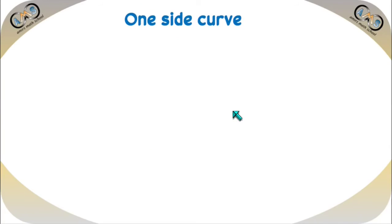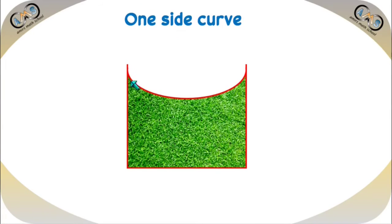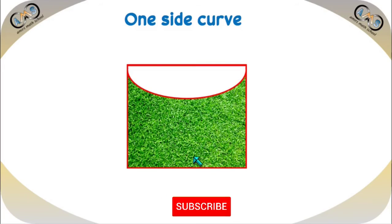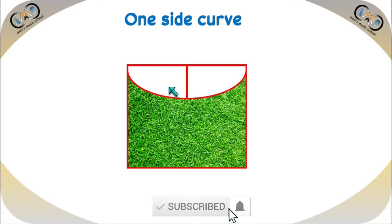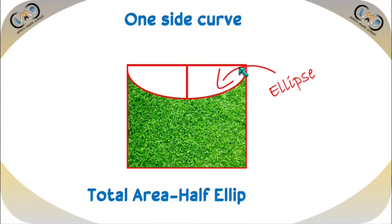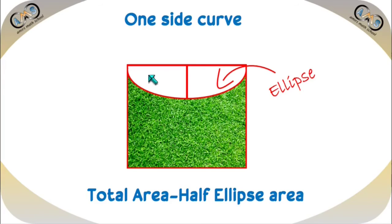Let's see another type of one-side curved length. In this case, first make it a rectangular type shape. Then divide it into two triangles and find the area of the rectangle. Consider the curved portion as a half ellipse and find that value using the half ellipse formula. Then subtract the half ellipse area from the total rectangle area — that is, total area minus half ellipse area — which gives the area of this type of curved length.